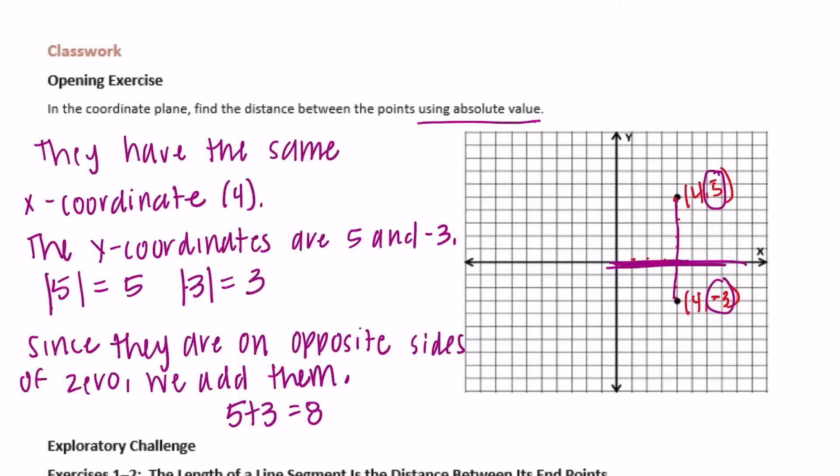So the distance is 8. You can check — like I said, you could have just counted: 1, 2, 3, 4, 5, 6, 7, 8.